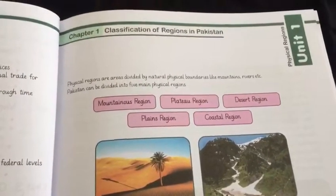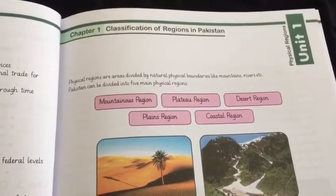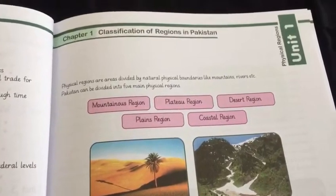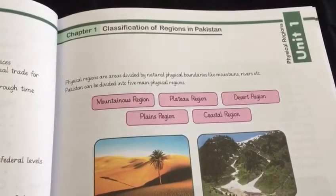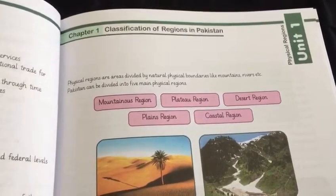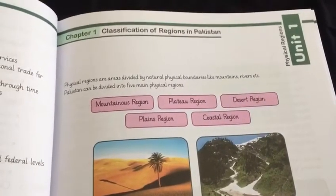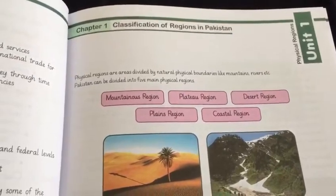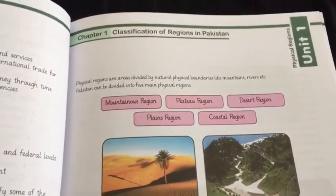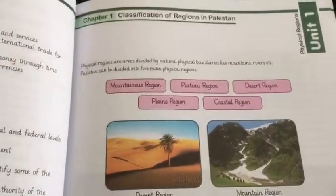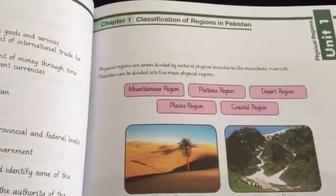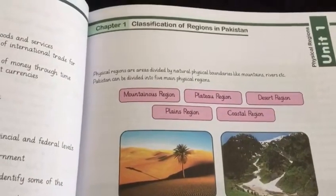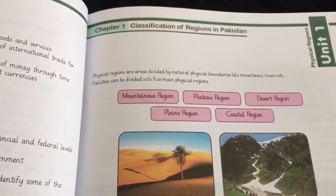Now what does classification mean? Classification means the division. When we classify something we divide it. For example, if we classify the regions in Pakistan, it means that the Pakistan landforms are divided into different types.